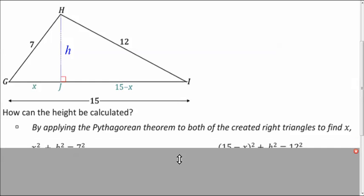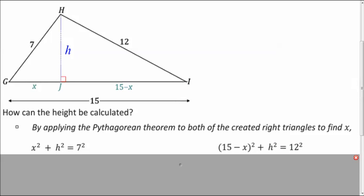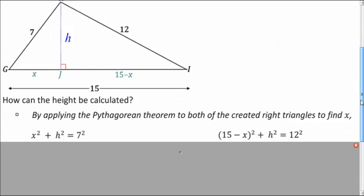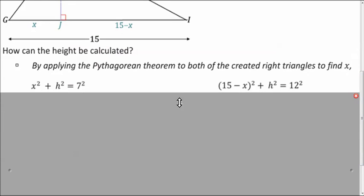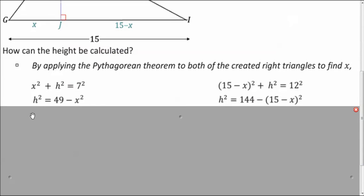So hopefully you wrote two equations that look like these. And we want to solve for x. So if we can get both of these equal to h or h squared, we can set them equal to each other and solve for x. So that's what we're going to do. Let's isolate h squared on both of these. And now these are equal, so we can use substitution, or the transitive property, to say that these two are equal to each other.